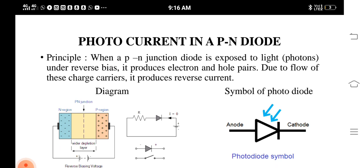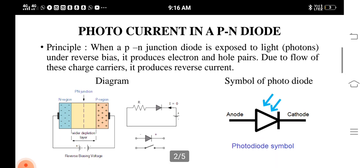The principle used in photocurrent is when a PN junction diode is exposed to light, that is photons, under reverse bias, it produces electron and hole pairs. Due to the flow of these charges, it produces a reverse current called photocurrent.